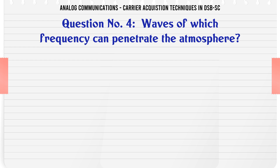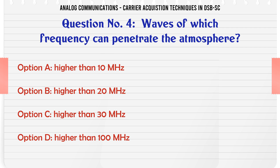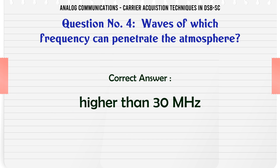Waves of which frequency can penetrate the atmosphere? A. Higher than 10 MHz. B. Higher than 20 MHz. C. Higher than 30 MHz. D. Higher than 100 MHz. The correct answer is higher than 30 MHz.